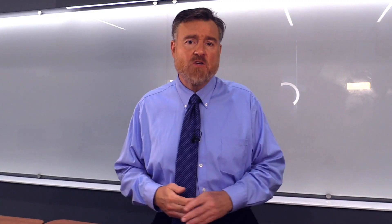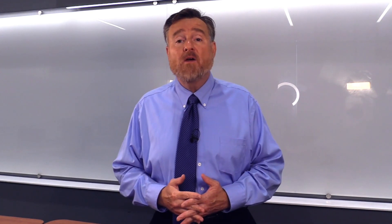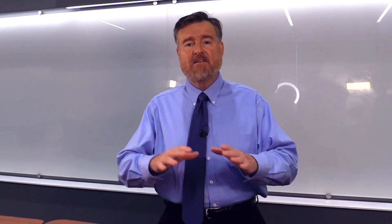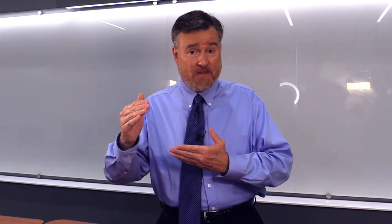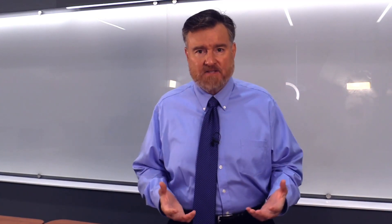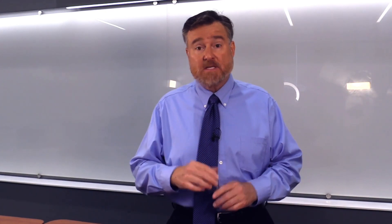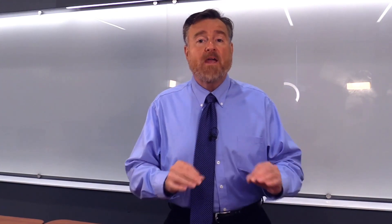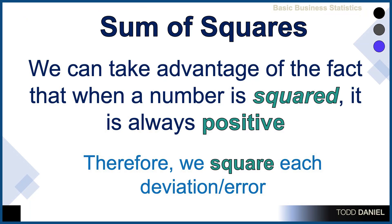It's not something we can use for math. Instead, we are going to take a different approach. We need to get rid of those negative deviation scores — the ones that are balancing out the positive deviation scores. One approach would be to use absolute values, but that makes the math and algebra difficult later on. So instead, we are going to take advantage of the fact that when you square a value, that value is always positive. We are going to square each deviation score.